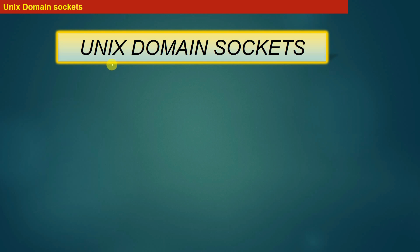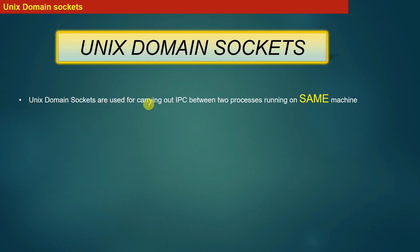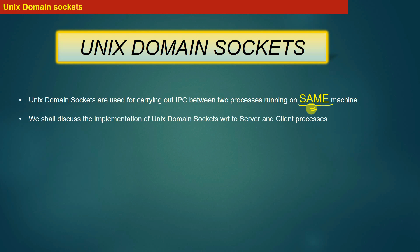Let us start with our first method of establishing inter-process communication. We will study UNIX domain sockets in this section of the course. UNIX domain sockets are used for carrying out inter-process communication between two processes which are running on the same machine. Whenever we say inter-process communication, by default we mean communication between two processes running on the same machine.